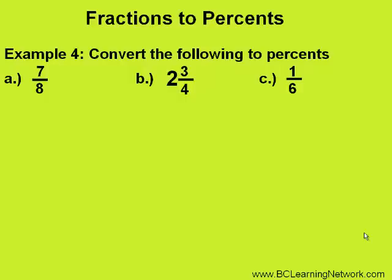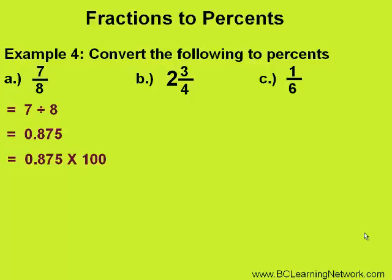We'll take 7 eighths and do 7 divided by 8, converting that to a decimal, which is 0.875. Now we'll convert this decimal to a percent by multiplying by 100, which moves the decimal two places to the right, giving us an answer of 87.5%.